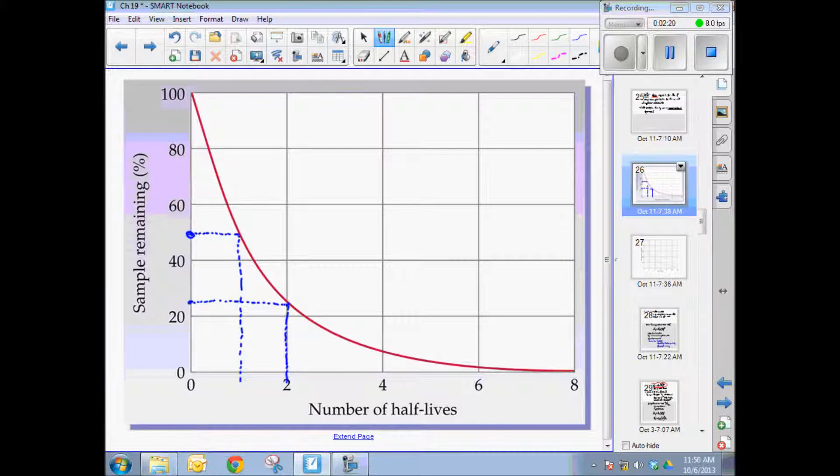Half of 25% of the original amount would be 12 and a half percent. That's probably right about here. And if we draw a line over to the curve and drop down, right at about three. And you can see how this would describe a curve that gets progressively smaller and smaller.